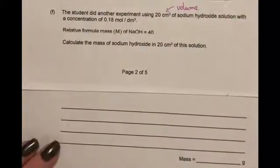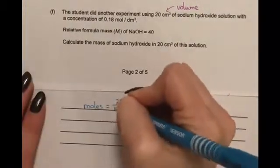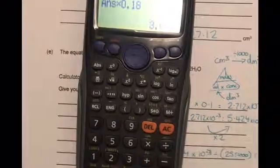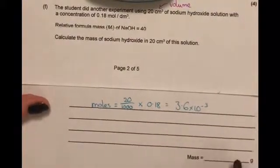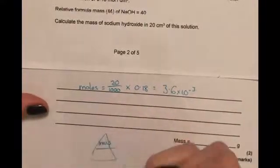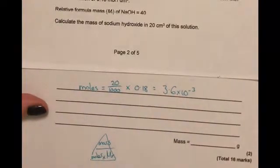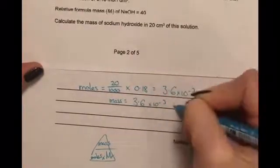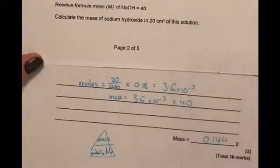So you have volume and concentration so you can work out the number of moles. It gets us 3.6 times 10 to minus 3 moles and then to convert that into mass we use mass equals moles times relative formula mass and then we need to find the mass of sodium hydroxide which equals 0.144.